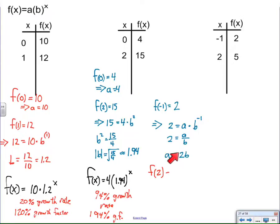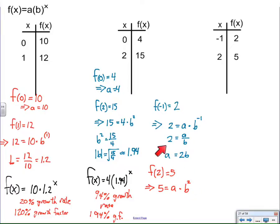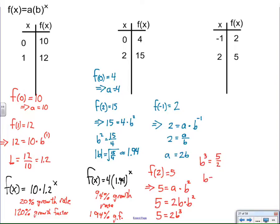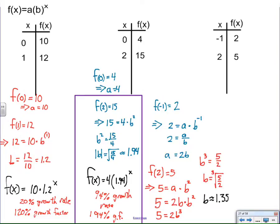So what? That doesn't tell me one value or the other by itself. However, I do have a new piece of information: f(2) is equal to 5. That means 5 equals a times b squared. Here's where the key step comes in — a is the same as 2b. So I replace a with 2b, and now I have a one-variable equation. 2b times b squared is b cubed, and I solve by taking the cube root.